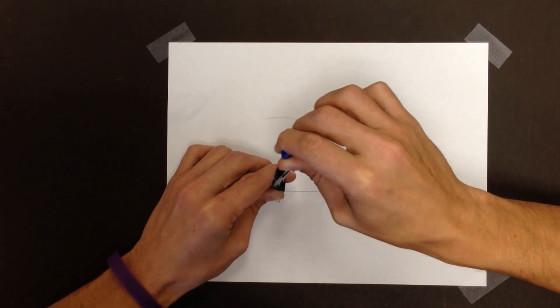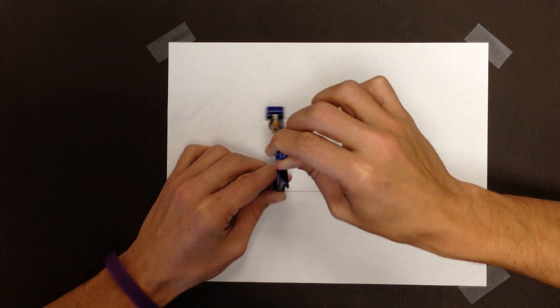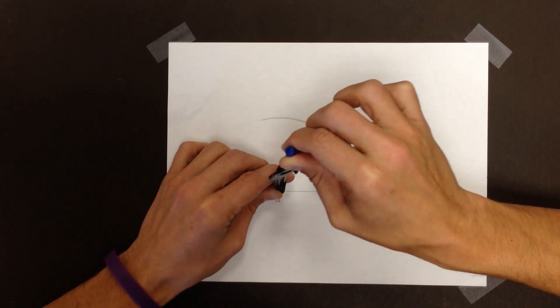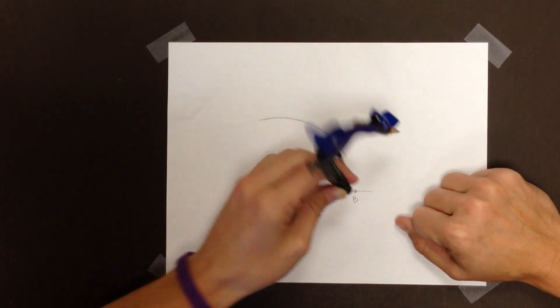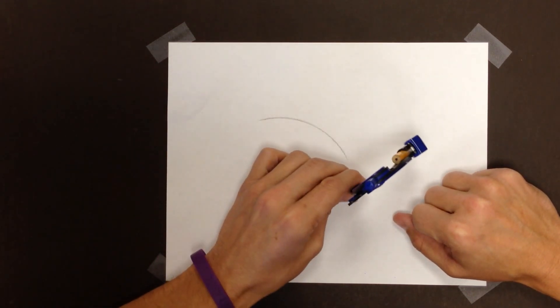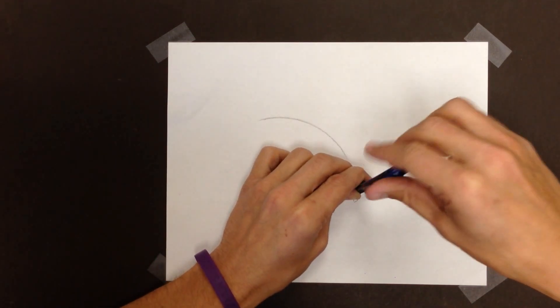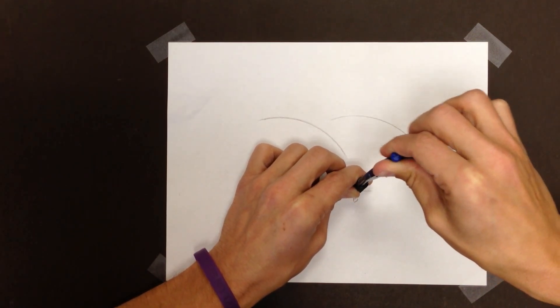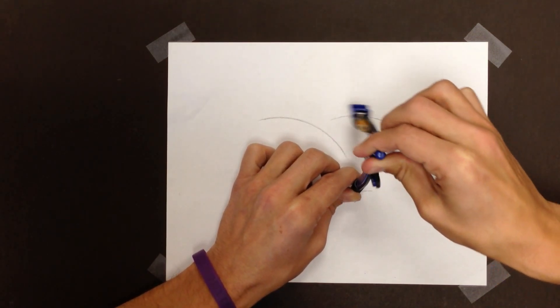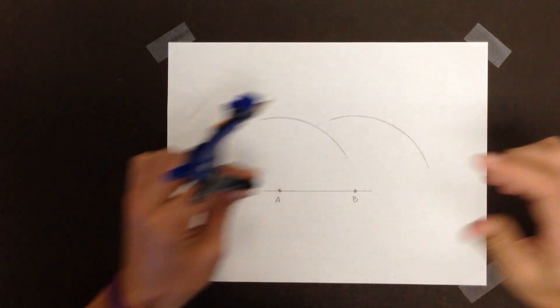There we go, much better. Without moving my compass, after that arc is nice and dark, I'm going to move the non-pointy end to B and do the exact same thing, drawing an arc. Excellent.